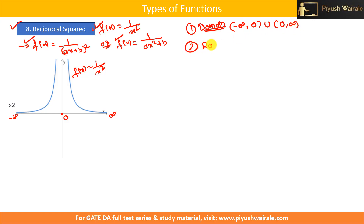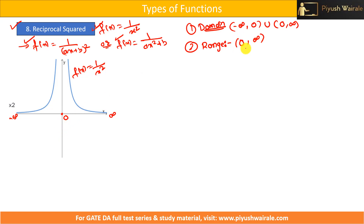What about the range? In the case of the reciprocal function, domain and range were the same. But for the reciprocal squared function, the graph gives only positive values, because x² is always positive. So we do not have any negative values. The range will be (0, ∞).